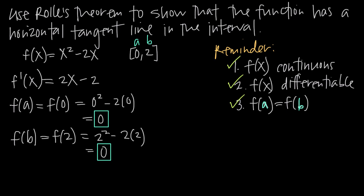With those three conditions met, Rolle's theorem tells us that there's some value c inside our interval from 0 to 2 where the tangent line to the function is horizontal. Any horizontal line has a slope of 0, so we'd be looking for the point at which the slope of the tangent line equals 0.